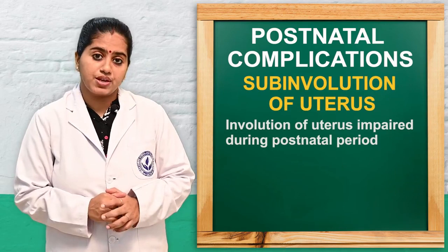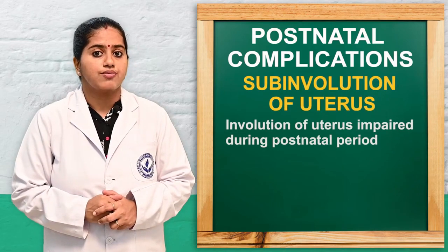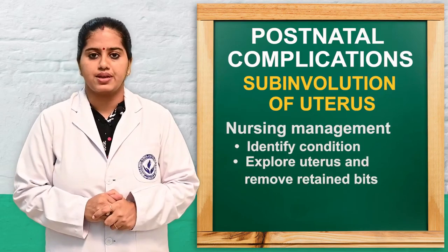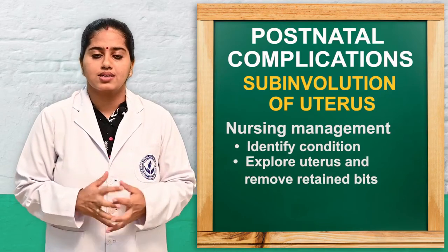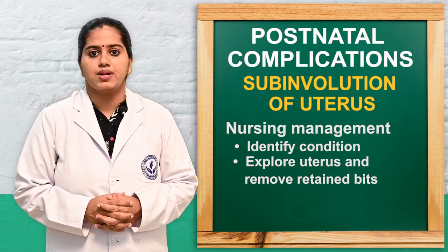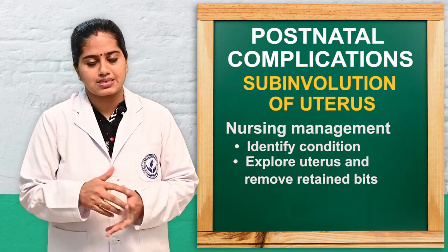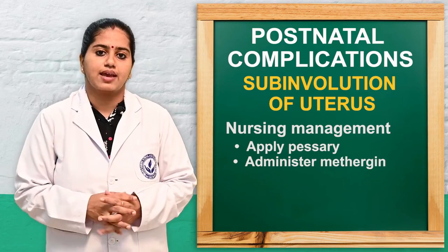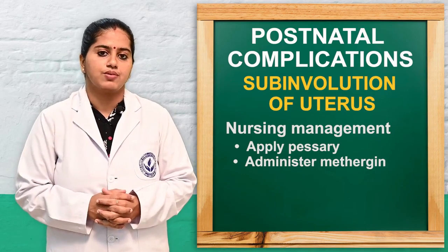The second problem is subinvolution of the uterus, where the involution of the uterus is impaired during the postnatal or puerperium period. We should identify the condition of the woman, explore the uterus, remove any retained products, and pessaries can be applied. Methergine drug can be given and the woman should be reassured.